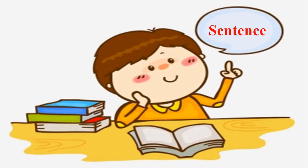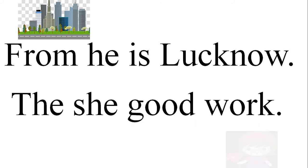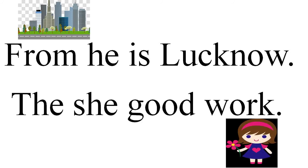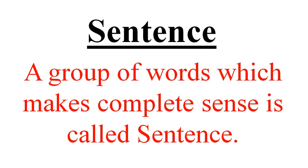Do you know what a sentence exactly is? You may answer, a group of words is called a sentence. On the screen you may see some words. Let's read: 'He is Lucknow.' Can you understand its meaning? Or, if I write 'the she good work,' can you understand it? No. Why? Because they do not make complete sense. So, a group of words which makes complete sense is called a sentence.